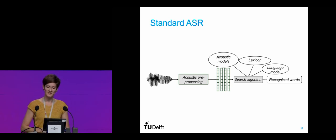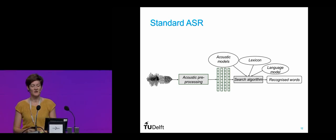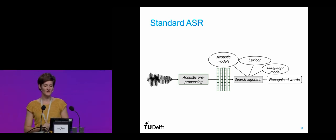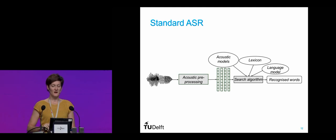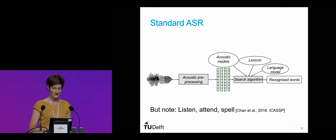Humans are able to recognize a word they've never heard before — they can judge whether something is a word or a non-word. An ASR system cannot do that. If a word is not in the lexicon, the ASR cannot recognize it, and that's a major difference between humans and machines.